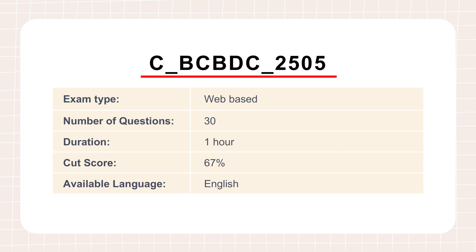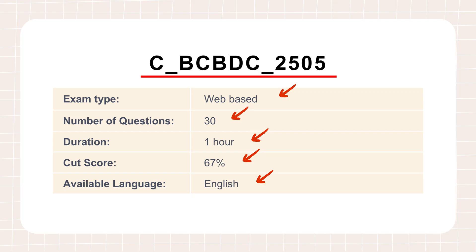Just for context, the source material mentions the CBC BDC 2505 exam. It's web-based, 30 questions, you get an hour, and the cut score is 67%. Oh, and it's in English. But for us today, this isn't about exam prep. It's kind of a roadmap to some really important ideas.